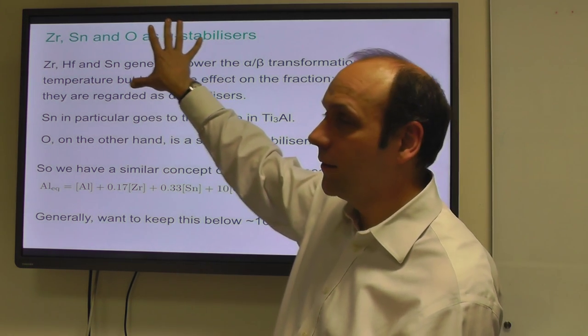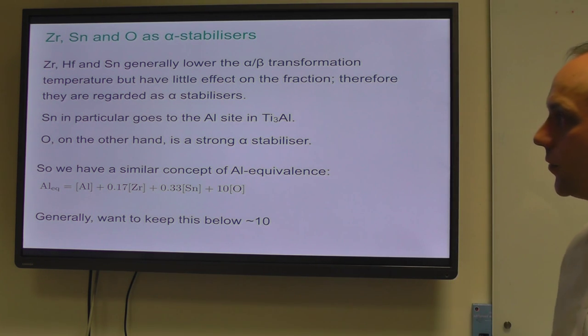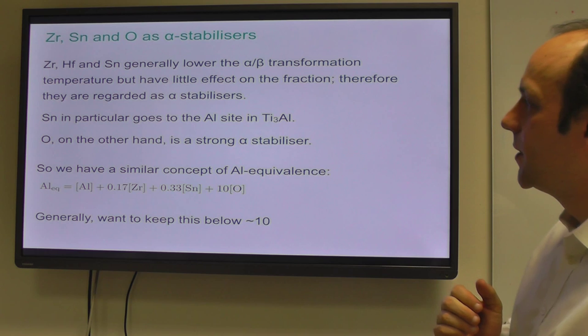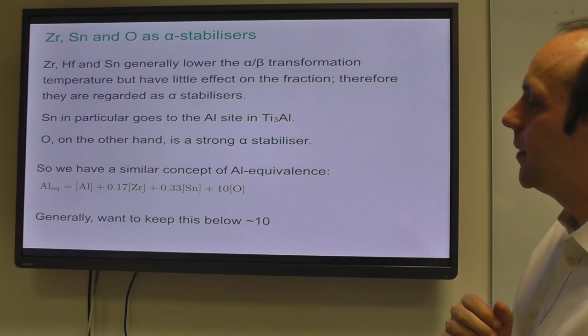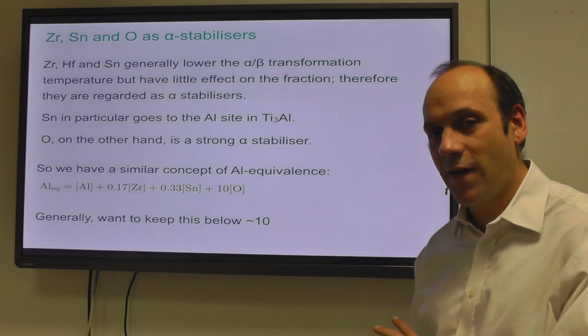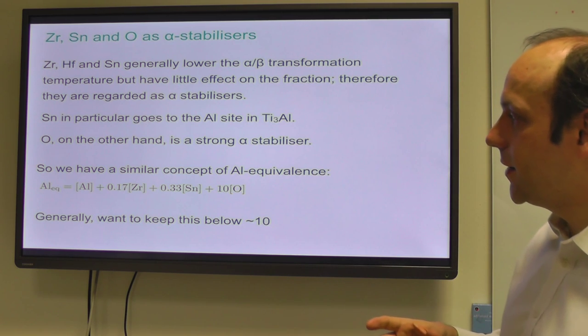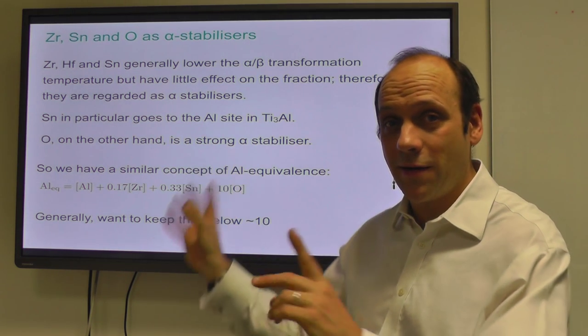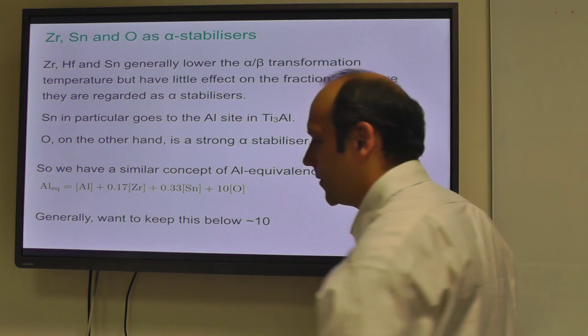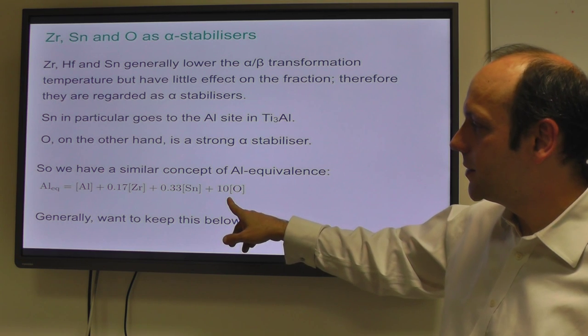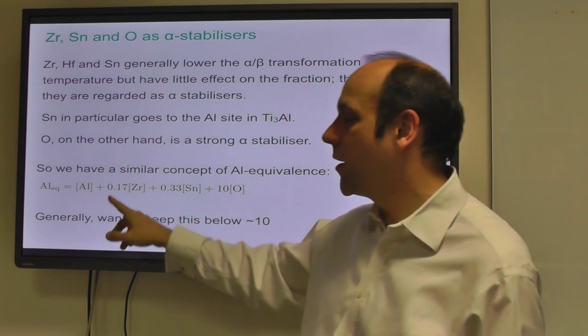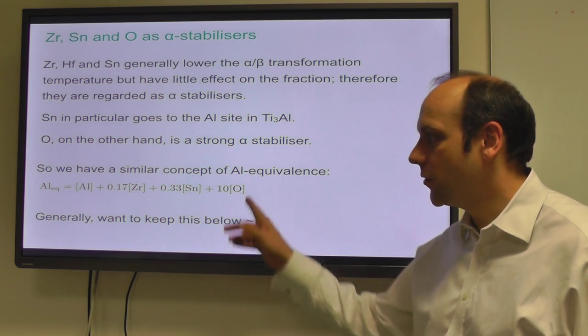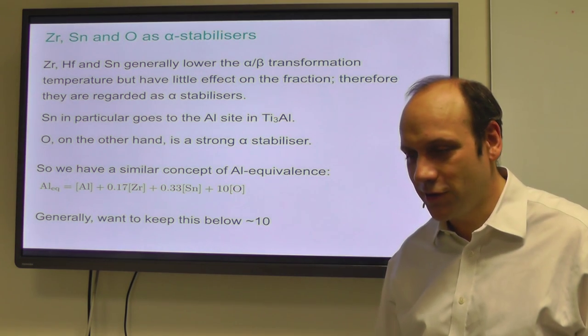We then need to think about, well, tin will do a similar sort of thing. Oxygen is also an alpha stabilizer. So we have a concept of aluminum equivalence, which is generated around the idea of how effective is it at changing the solvus to stabilize the alpha phase, in the same way as the molybdenum equivalence was. But the concern is about forming the alpha-2. So it's slightly misapplied actually. We generate it in terms of the solvus, but our concern is about the alpha-2. This aluminum equivalence has oxygen being a really strong alpha stabilizer, 10 times as effective as aluminum, and tin and zirconium being weaker. Generally, you want to keep that below about 10 overall when you're doing these in weight percent.